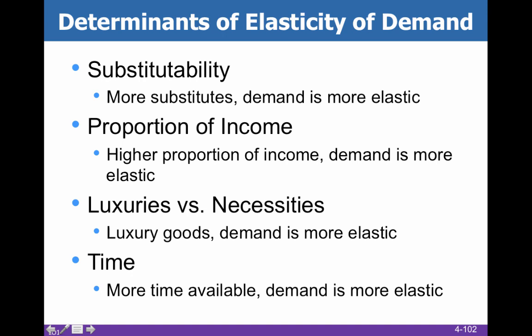Proportion of income: imagine staples get a little more expensive — a staple costs about a hundredth of a penny, so if it becomes two hundredths of a penny, that's not going to change how many you use because it's such a small portion of your income. However, when buying a car, which is a relatively high proportion of your income, if the price doubled, that would dramatically change your purchasing decision. Luxuries and necessities: necessities tend to be more inelastic because you need them, whereas luxuries are easy to forego and tend to be elastic.